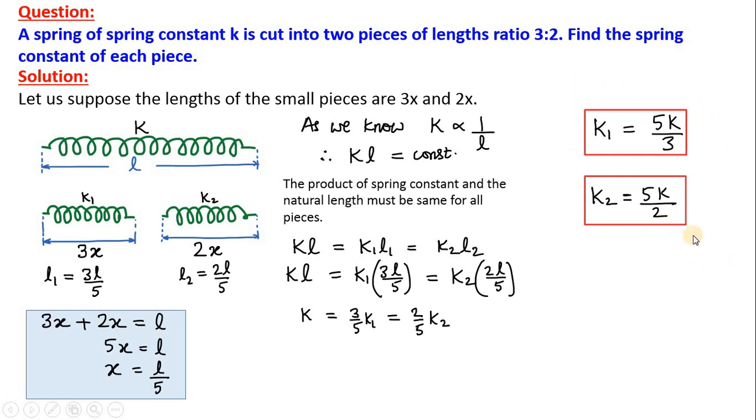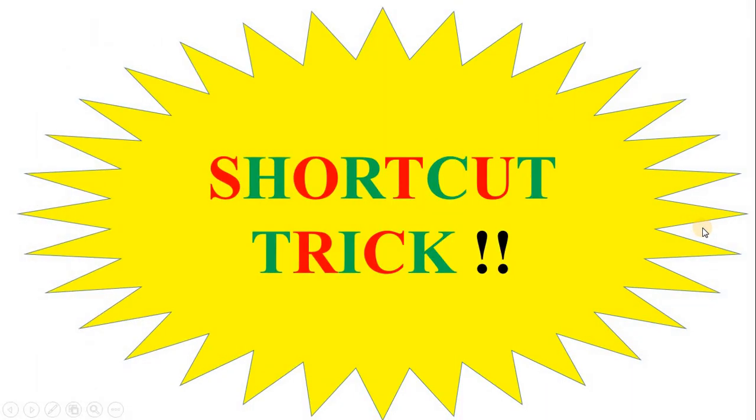In this manner, we have obtained our answers. But wait, I will tell you a shortcut method now. How you can avoid these long calculations and you can easily tell just by looking at the ratio what is the final answer of the spring constants. Let us look at the shortcut trick. How we can get the answer in less than 5 seconds.